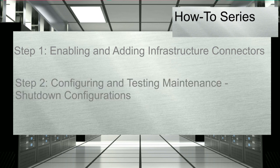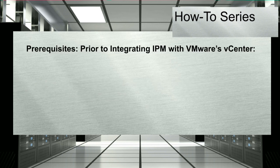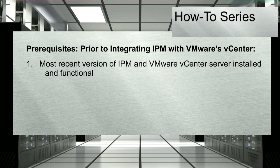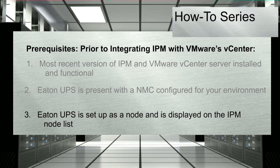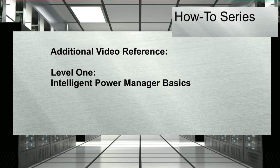Before we begin, ensure that you have the following prerequisites complete: the most recent versions of IPM and VMware vCenter server installed and functional; an Eaton UPS present with a network interface card configured for your environment; and the Eaton UPS set up as a node and displayed on the IPM node list. If you have any questions concerning IPM setup or installation, refer to the video entitled Intelligent Power Manager Basics.